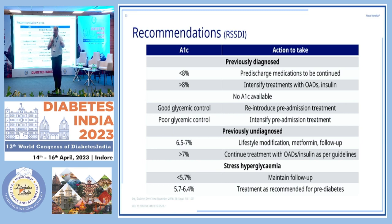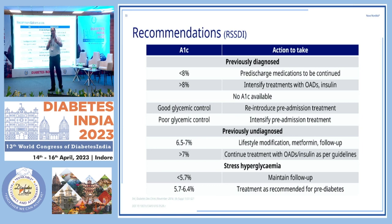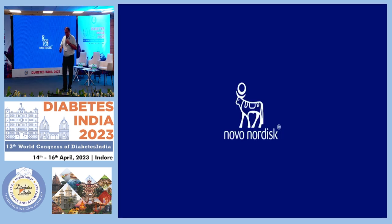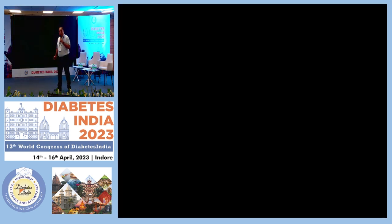Key summary: do not use sliding scale insulin — always use basal bolus. Anyone admitted with blood glucose more than 150 should be investigated. Plan discharge advice carefully for non-critically ill patients. Thank you very much.